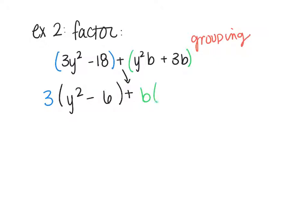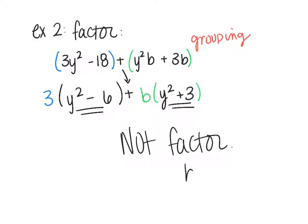So, y²b, take out a b, leaves me with a y². 3b, take out a b, leaves me with a 3. So, now notice, these two things are not the same. So, with factor by grouping, something that has to happen, you have to have the same thing in the parentheses in order to write down the repeat and the leftover. So, because those things don't match, this is not factorable by grouping. Now, as you get higher in math, there's other methods to factor, but for this, that's as far as I can go, so it's not factorable by grouping.